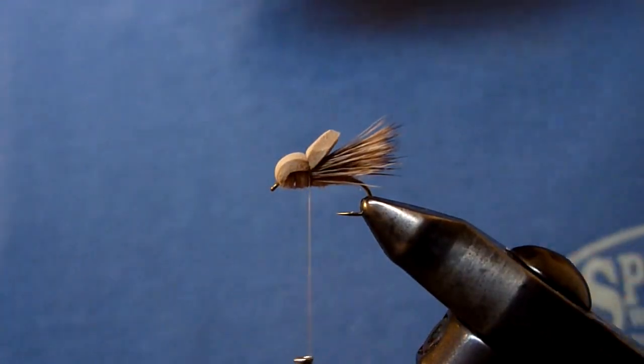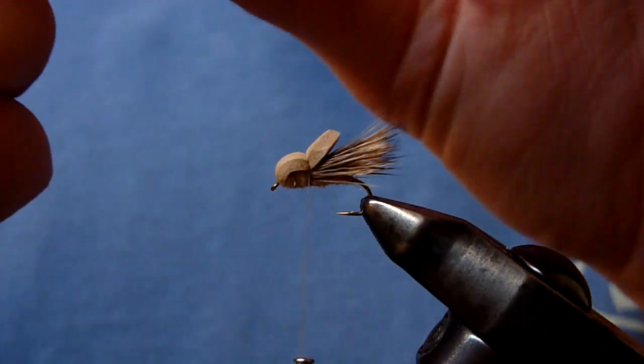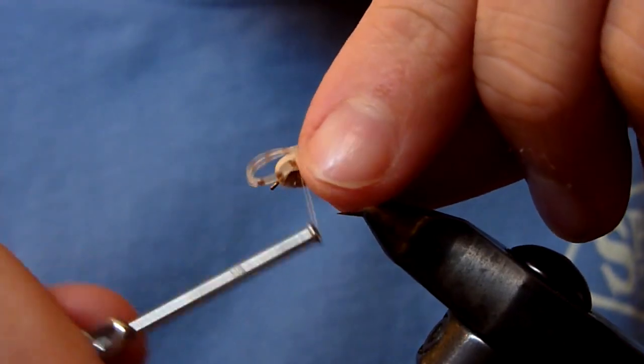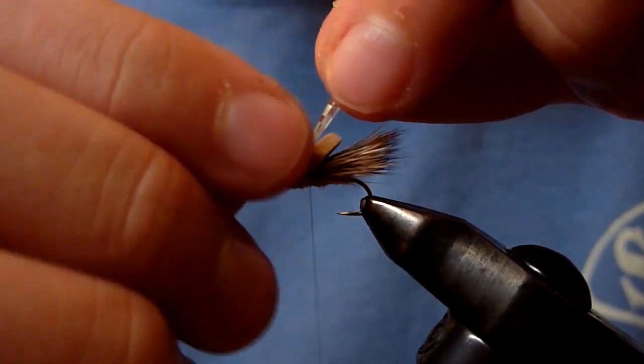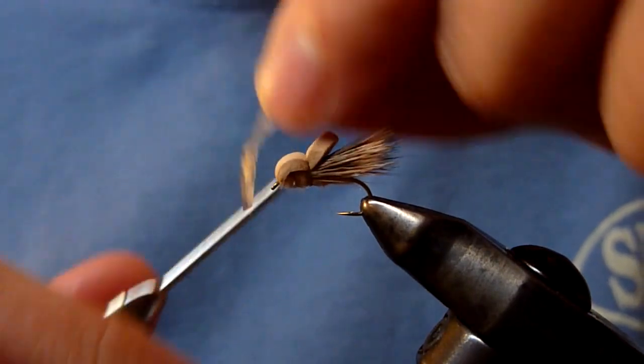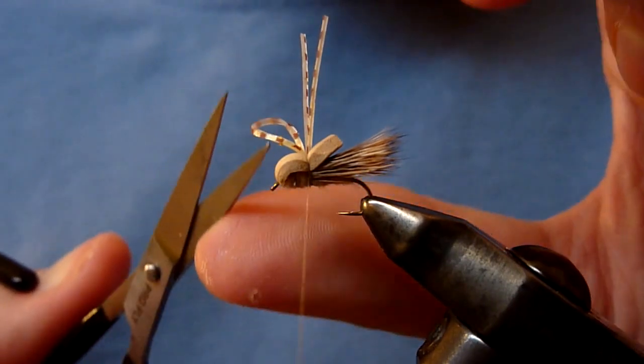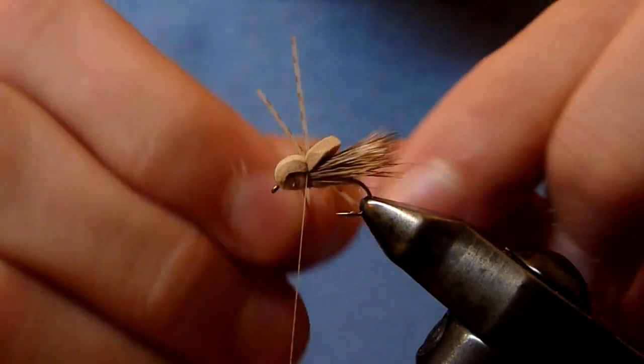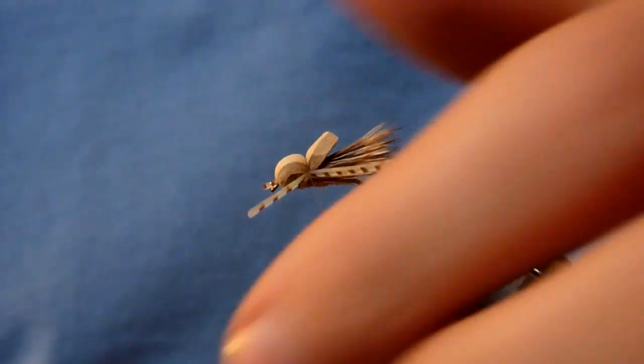Now we're going to take some legs. I've got some tan silly legs here. Double them over on itself. Tie those guys in. Get them set right. Pull them to the sides. Tighten the thread a little bit. Flare those legs out.